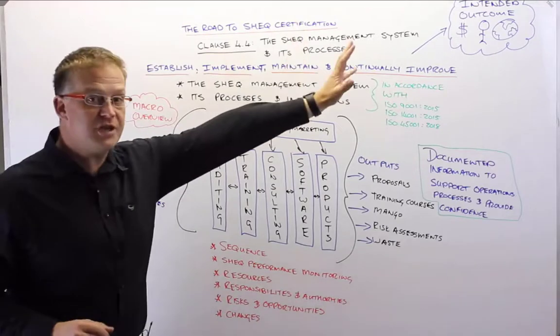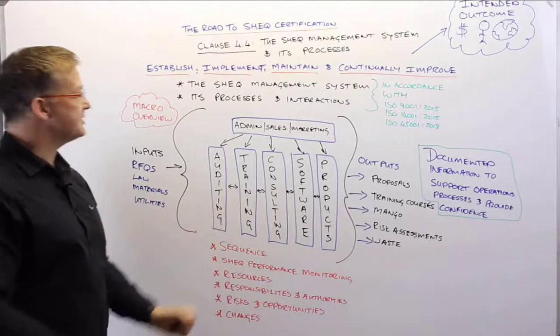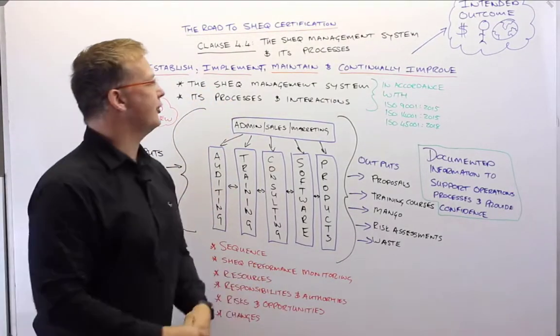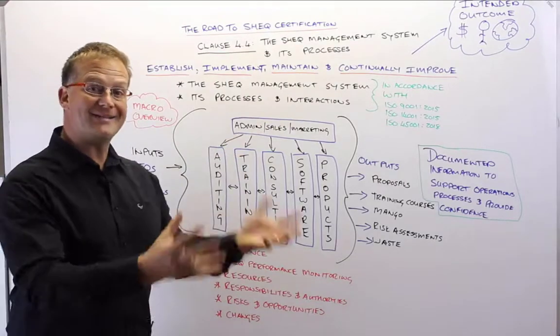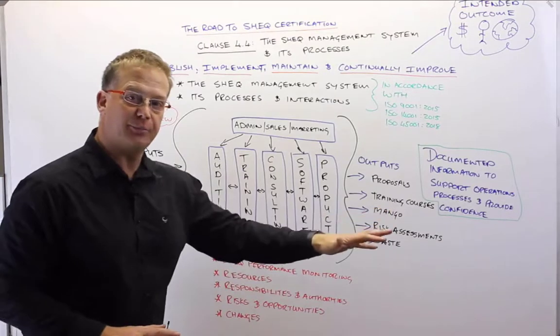So in order to achieve the intended outcome of the management system, we need to establish, we need to create, we need to implement the system that we've created, we need to maintain it, review it, audit it, inspect it, and then continually improve it.